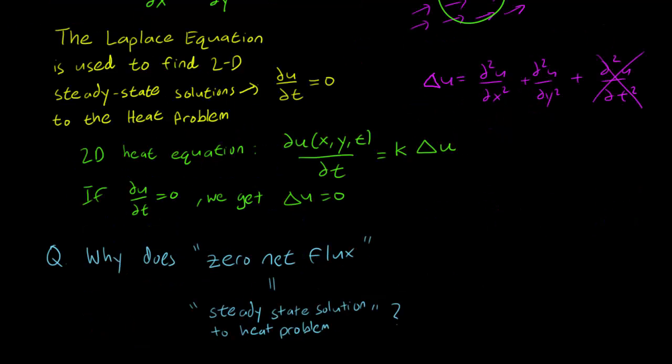But here's a question for you before we end this video. Why does zero net flux mean the same thing as a steady-state solution to the heat problem? As you can see, Laplacian U equals zero means two things. So they must be the same thing somehow. So I want you to take a moment to think about it, use your physical intuition. We will discuss this in class.